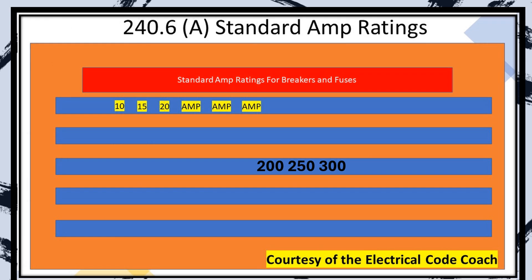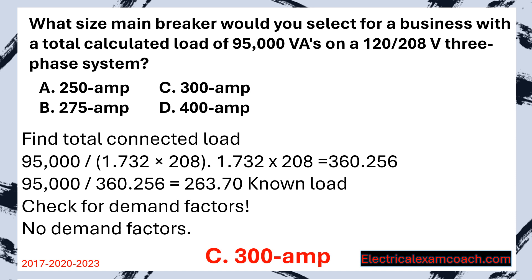We head to Table 240.6A and choose the next standard size — and this is where the beauty happens. We put this on a 300 amp breaker instead of the 400 amp from the previous question. That means we use larger wire and potentially larger conduit in the single-phase case, at greater overall cost. The beauty of three phase is the numbers come down: a 300 amp service means smaller wire, smaller pipe, and a smaller overall project cost.